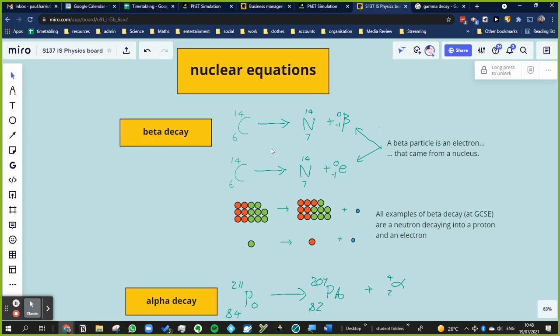So this is an example of beta decay, a carbon, an isotope of carbon, carbon 14, which has got six protons, well always six protons because it's carbon and eight neutrons, making it a mass number 14.